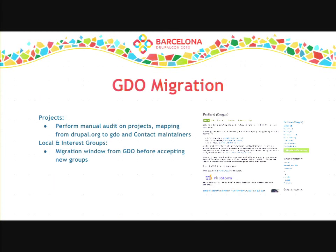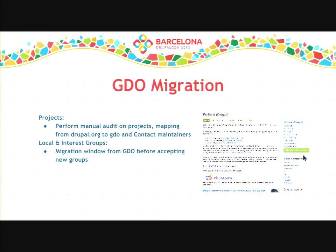So how are we actually going to do this? For projects, we're going to have to do a manual audit — go through each project and figure out what projects have a mapping on GDO, then give them a migration path to get them onto drupal.org. There aren't actually that many projects, so that shouldn't be too hard. For local and interest groups, since they don't exist on drupal.org, we're not going to do an automatic migration. There will be a migrate button we're going to post, probably — this is a draft mockup — and we'll have a window of probably a few months as a beta period where we won't create new groups on drupal.org, giving all existing GDO groups the chance to migrate themselves over and have that namespace.